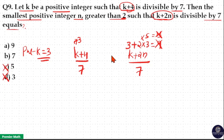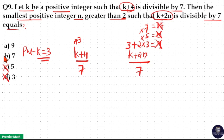Now if I put the value of n as 7, then 2 into 7 is 14, and 14 plus 3 is 17, which is also not divisible by 7.